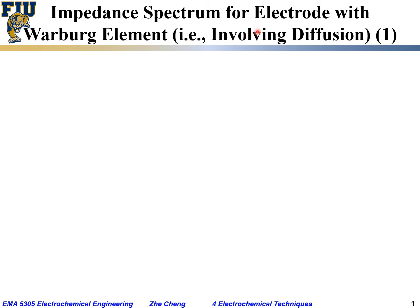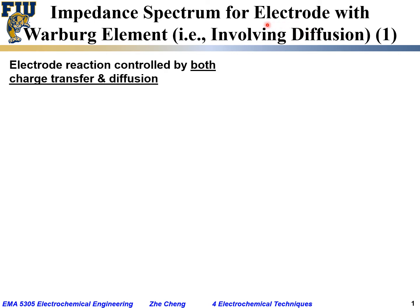We introduced two additional types of circuit elements: the constant phase element and the Warburg element. The Warburg element is a special case of the constant phase element when the alpha exponent is 0.5. The Warburg element involves diffusion — it represents impedance that involves diffusion. Now let's look at the impedance spectrum for electrode reactions that involve diffusion, which can be emulated by introducing a Warburg element.